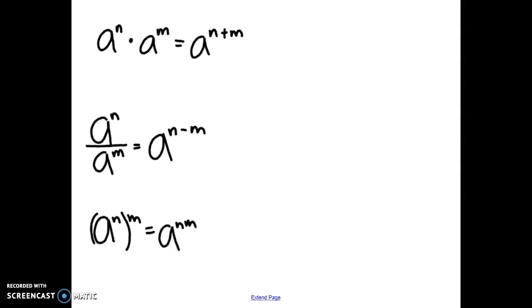The first property is we're noticing that we have multiplication in this one right here, and when you have multiplication you need to add the exponents together. So an example of that would be x to the second times x to the fourth, and we would add those exponents to get x to the sixth.